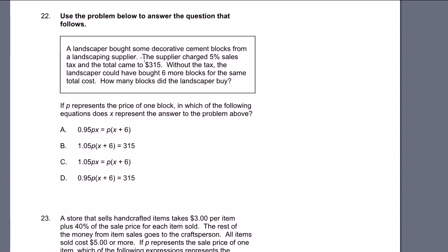Problem 22. A landscaper bought some decorative cement blocks. The supplier charged 5% sales tax and the total came to $315. Without the tax, the landscaper could have bought 6 more blocks for the same total cost. How many blocks did the landscaper buy? If p represents the price of one block, in which of the following equations does x represent the number of blocks bought?